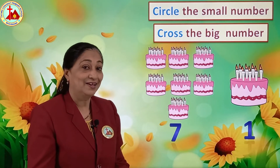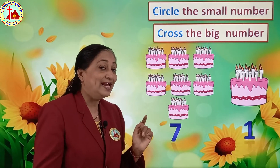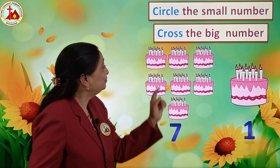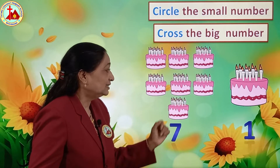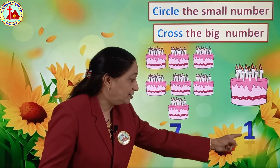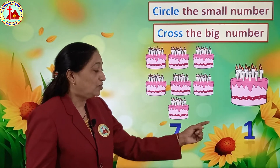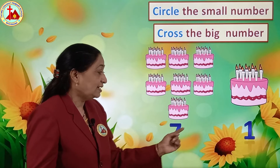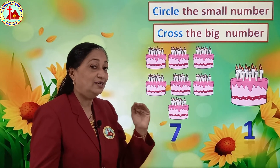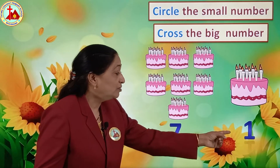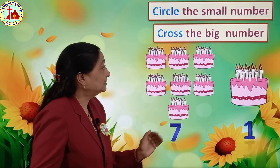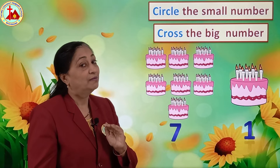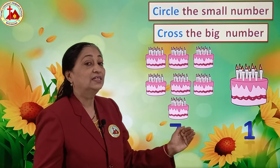Yummy cakes! First we are going to count them before cutting and eating: 1, 2, 3, 4, 5, 6, 7. And here only one cake is there. So here we have written 1 and here 7. So now, 1 will come before 7 - we say 1, 2, 3, 4, 5, 6, 7 - so 1 is the smaller number and 7 is the big number because 1 comes before 7 and 7 comes after 1. After numbers are always the bigger numbers and before numbers are always the smaller numbers.